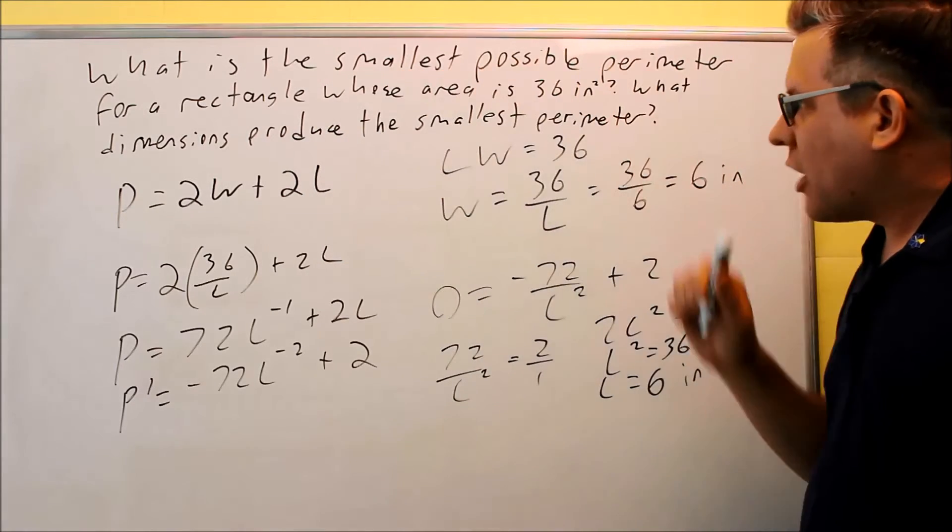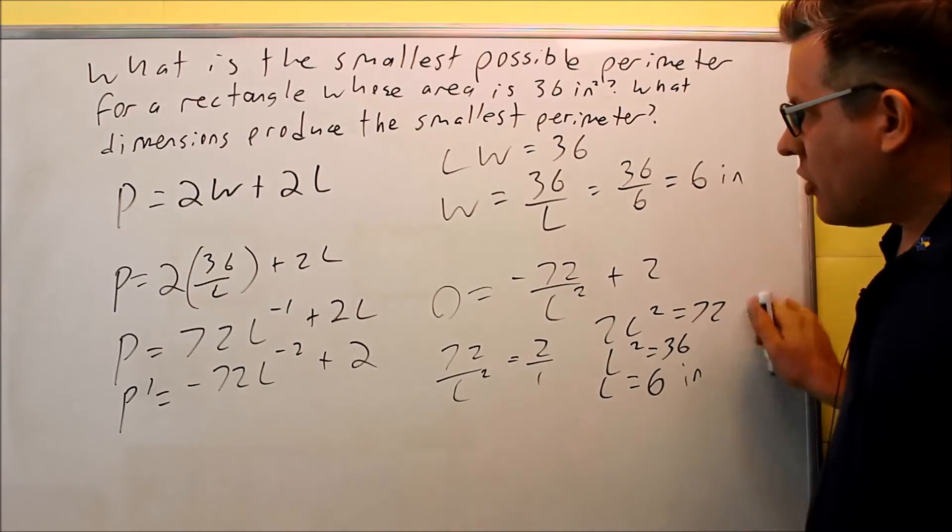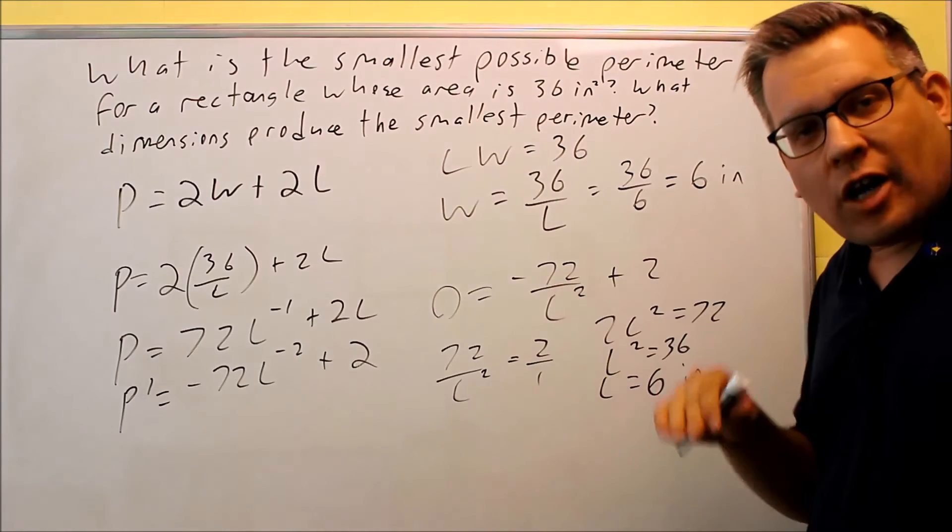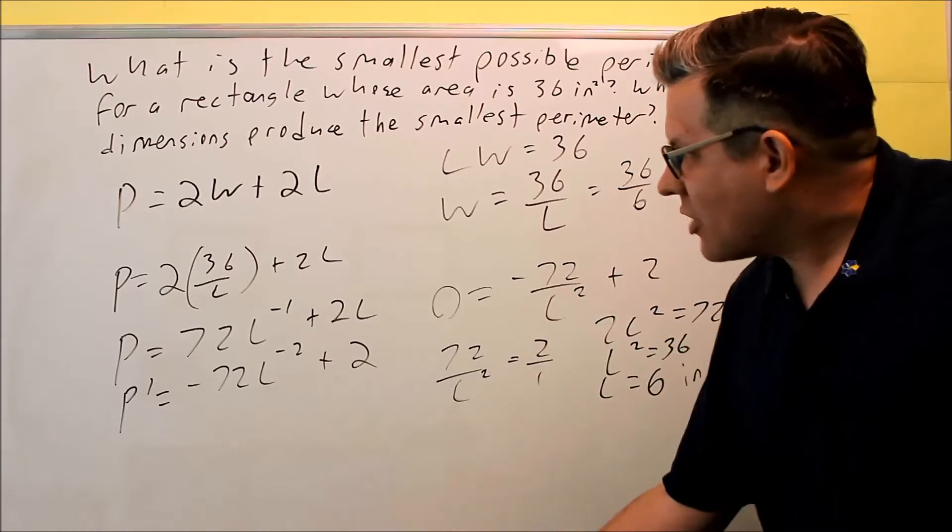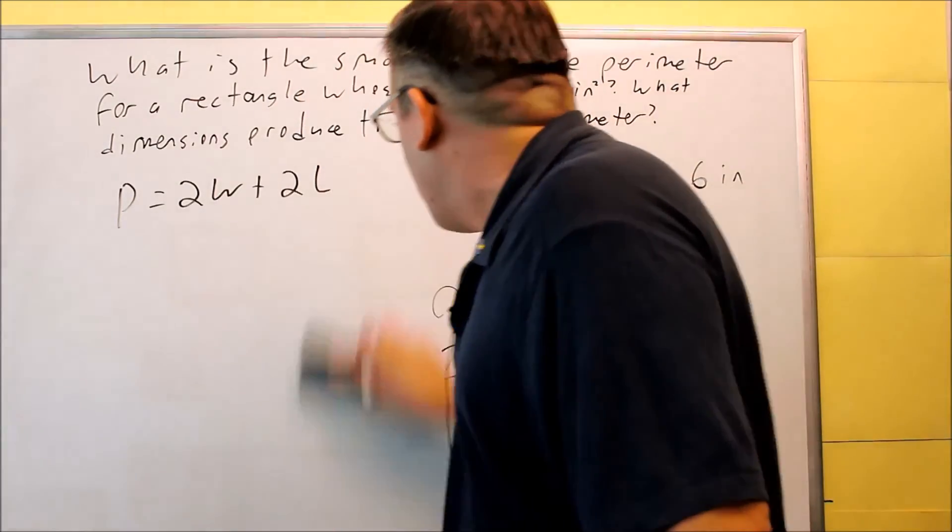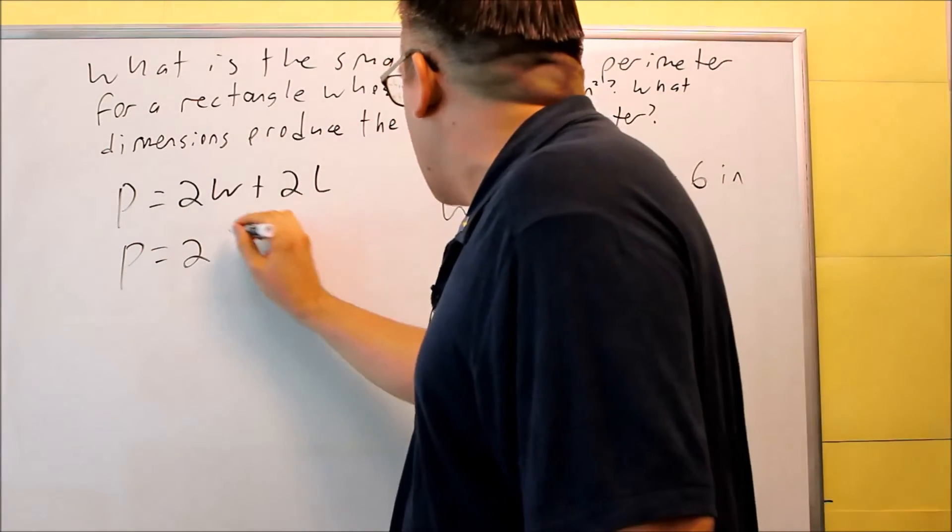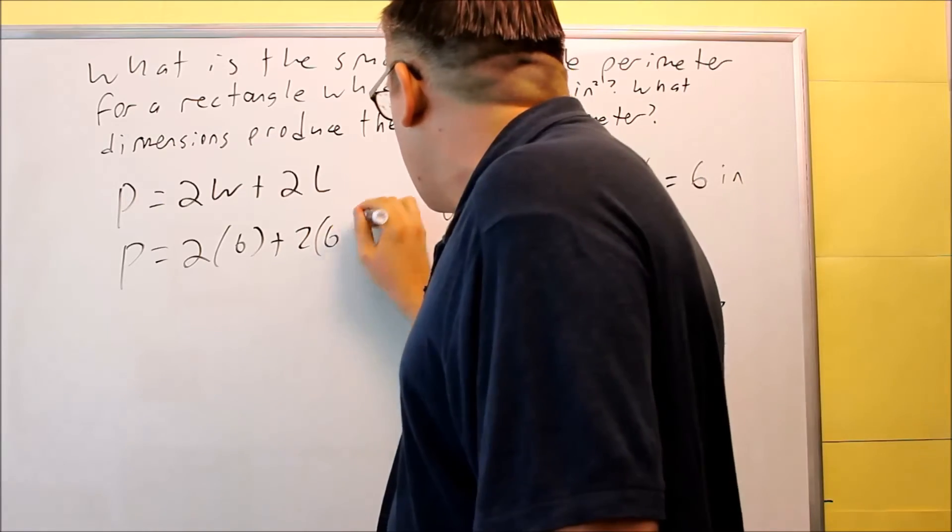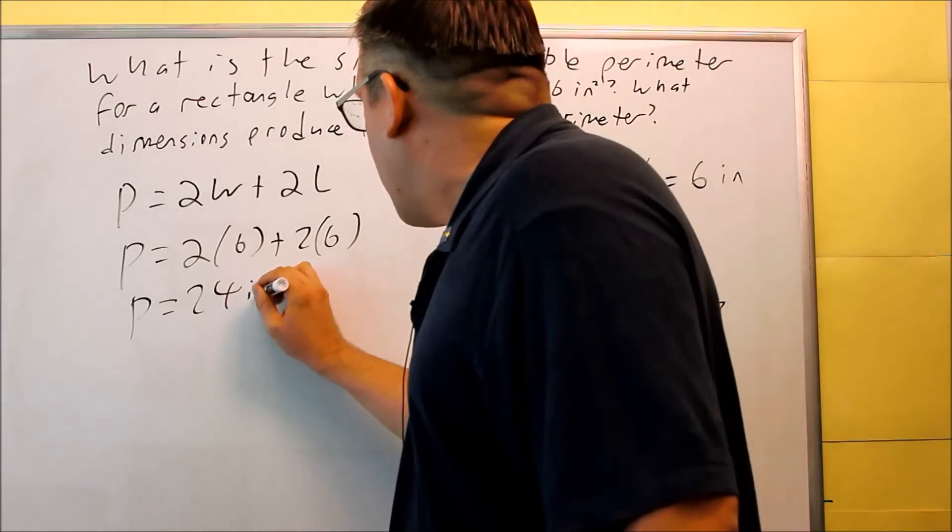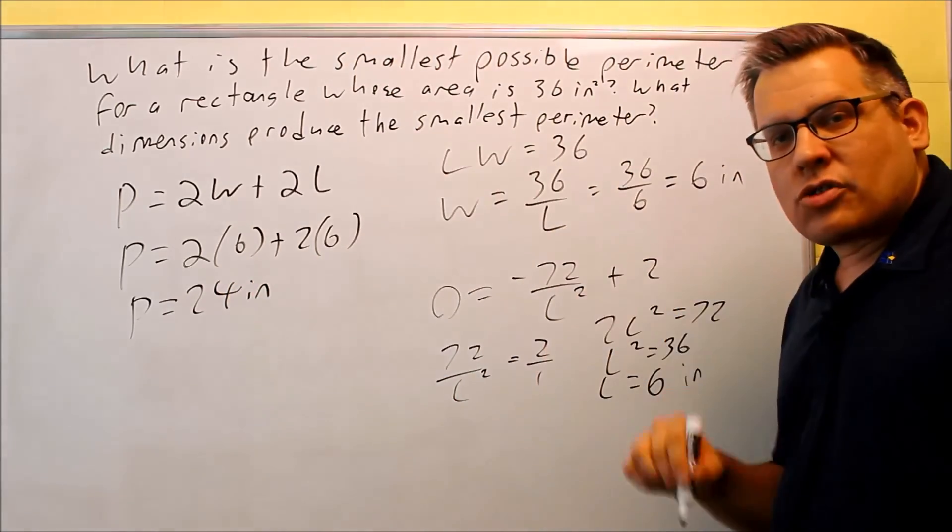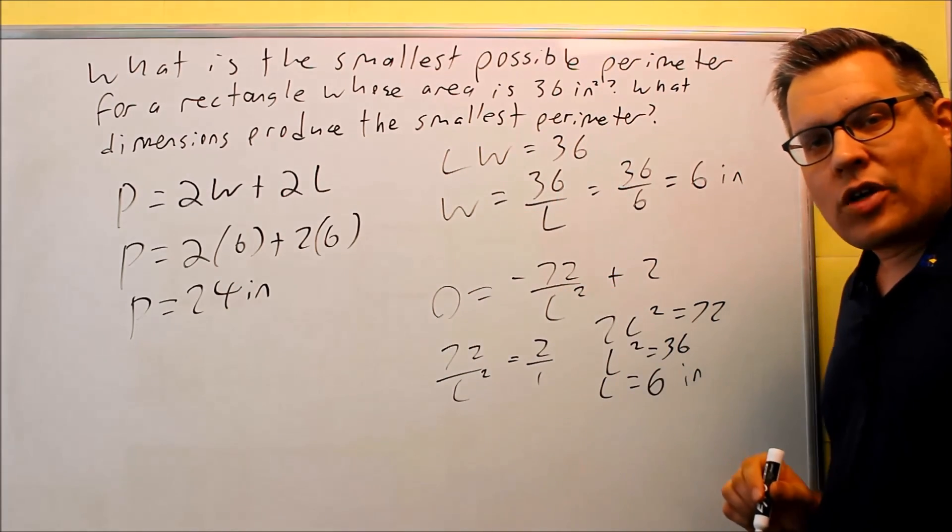Then the other question says what is the smallest possible perimeter? What you're going to do is put both of these back into the original one and you can find out what the perimeter actually is. You don't want to multiply, because we know that's 36 - it's not asking for area, it's asking for perimeter. So let's put these back in here. Perimeter equals 2 times 6 plus 2 times 6. Perimeter is 12 plus 12. That means 24 inches is your perimeter. It's not inches squared because we're not talking about area, we're talking about dimensions, how far it is all the way around the outside of the rectangle.